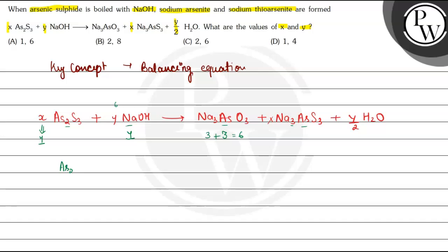So we can write this equation as As2S3 plus 6 NaOH gives Na3AsO3 plus Na3AsS3 plus (Y/2) H2O. Now we have to calculate this Y.